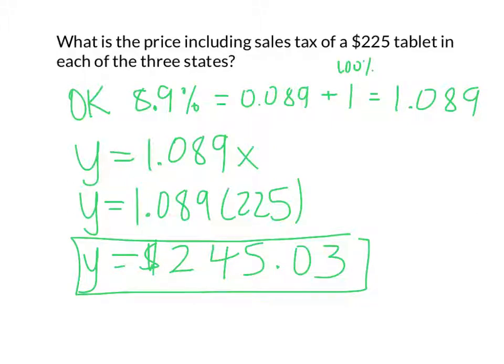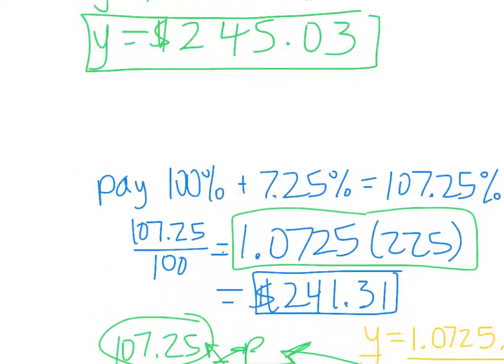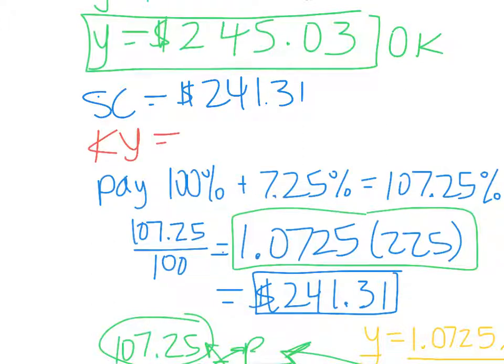So you can see the three very different prices, even though it's the exact same tablet. Here is our $241.31, and this was in South Carolina. This one was our Oklahoma, $245.03. And Kentucky was the $238.73.